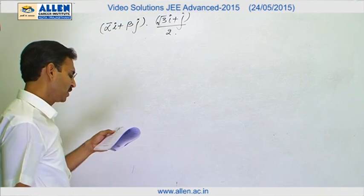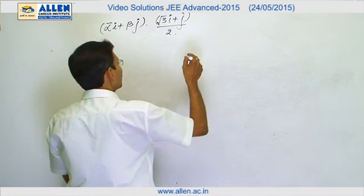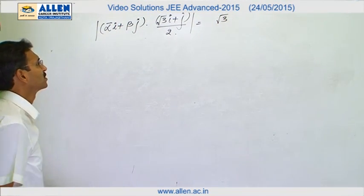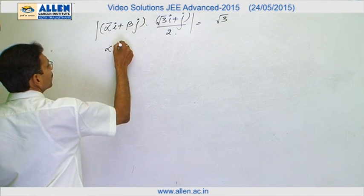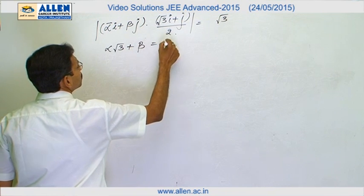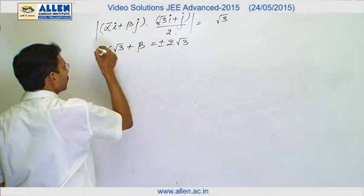This is the dot product with its unit vector and this is given as root 3. But it is the magnitude which is root 3. That is why this is the relation. We will solve it: alpha root 3 plus beta equals to plus minus 2 root 3.